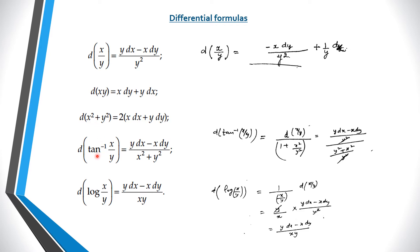The next is the derivative of tan inverse of x upon y. Since the derivative of tan inverse theta is 1 over 1 plus theta squared, the derivative of tan inverse (x/y) is 1 over 1 plus x squared upon y squared, into the derivative of x upon y. The derivative of x upon y is y dx minus x dy upon y squared. After simplifying, we have y dx minus x dy upon x squared plus y squared, which is the complete differential of tan inverse (x/y).